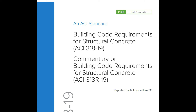Hey friends, welcome back to Civil Engineering Mastery. In this video, let's discuss the ACI code. ACI refers to the American Concrete Institute. ACI 318 is the code specially meant for building code requirements for structural concrete. The recent version is ACI 318-2019. There is also a commentary on building code requirements for structural concrete — ACI 318R-2019 — and in this code we have both ACI 318-19 and the commentary.